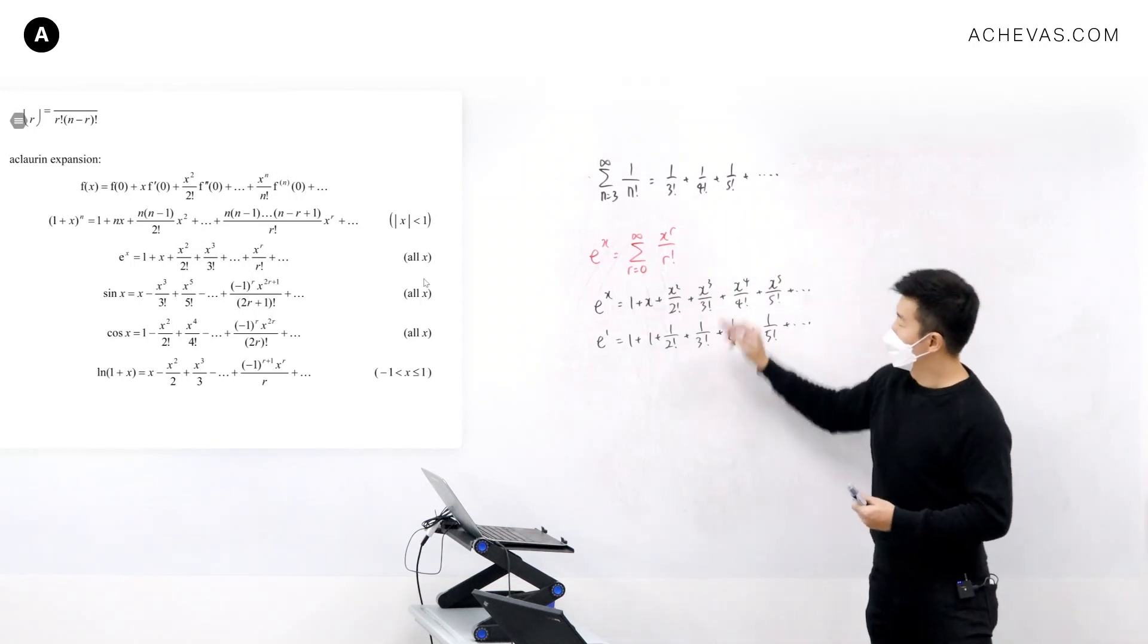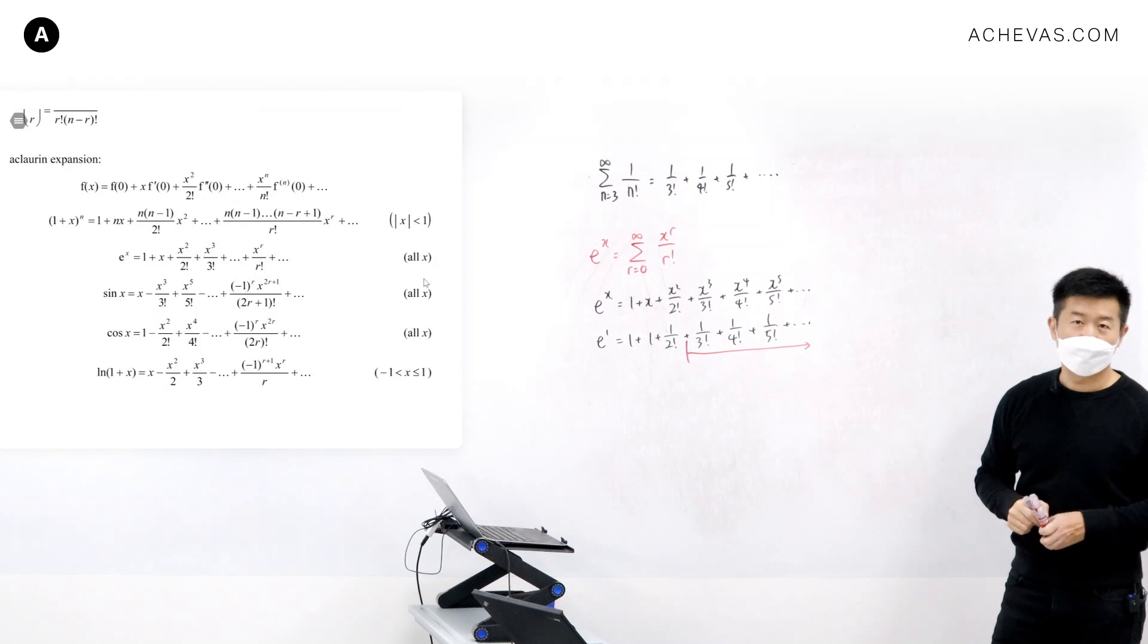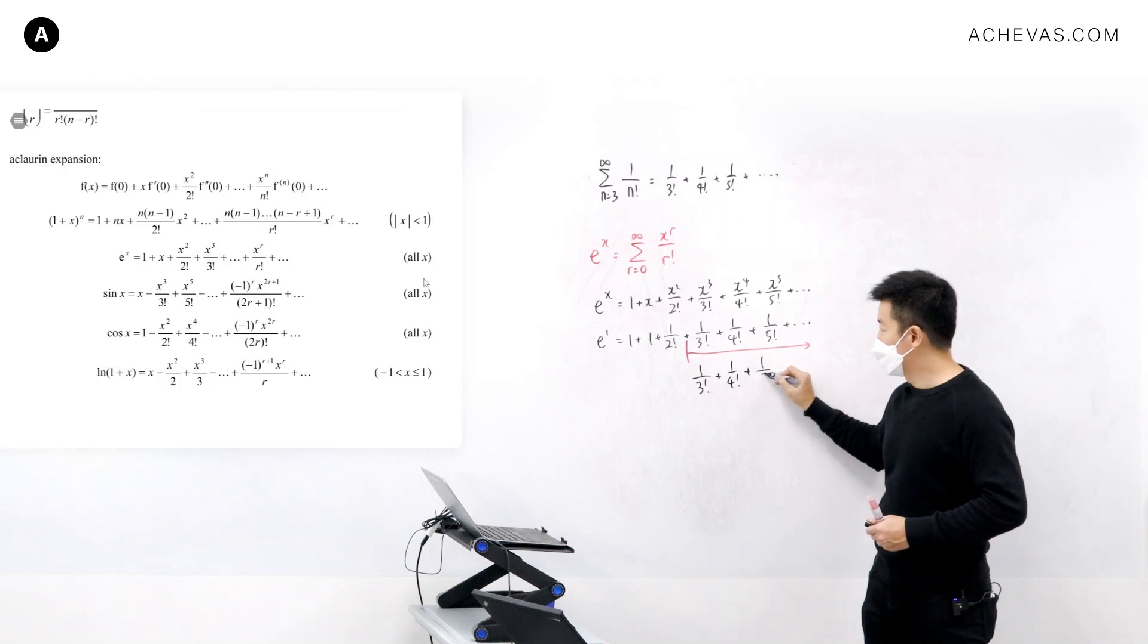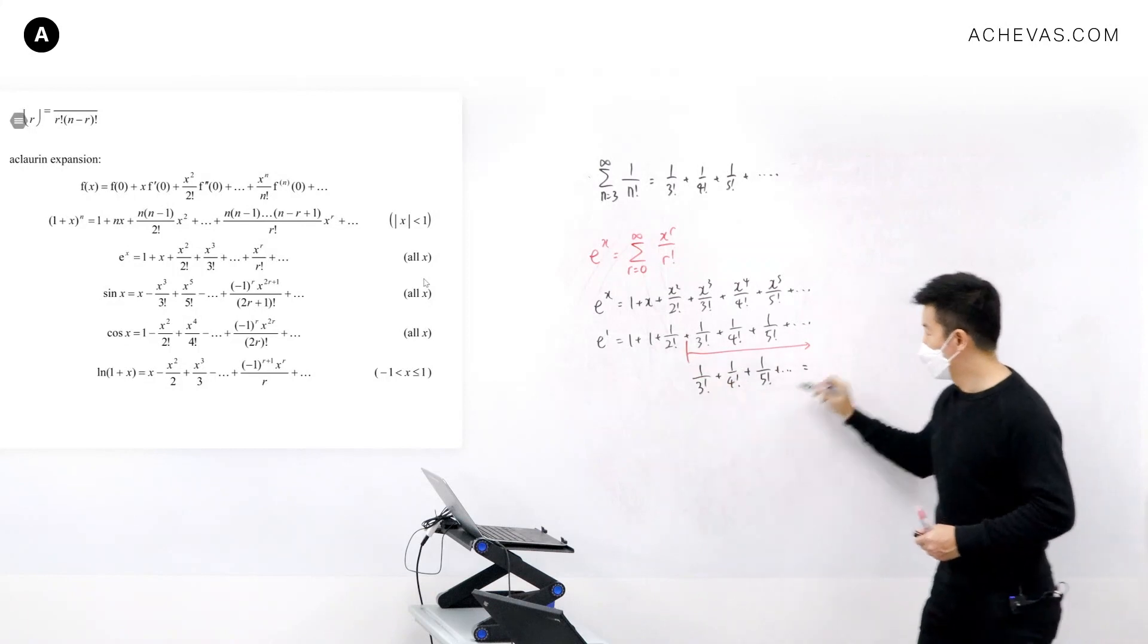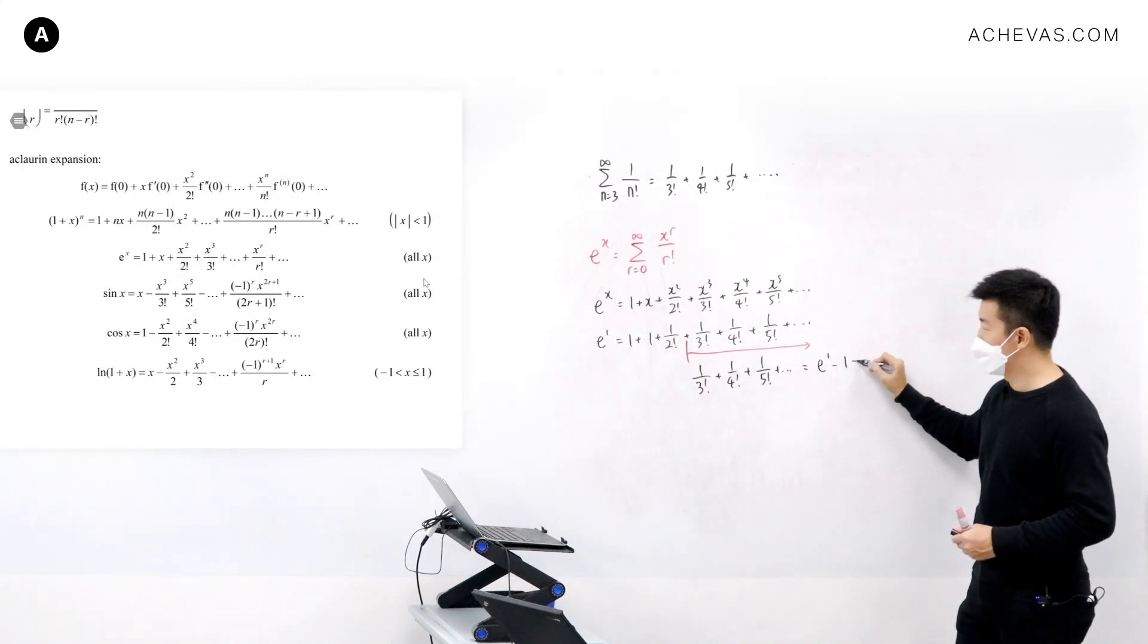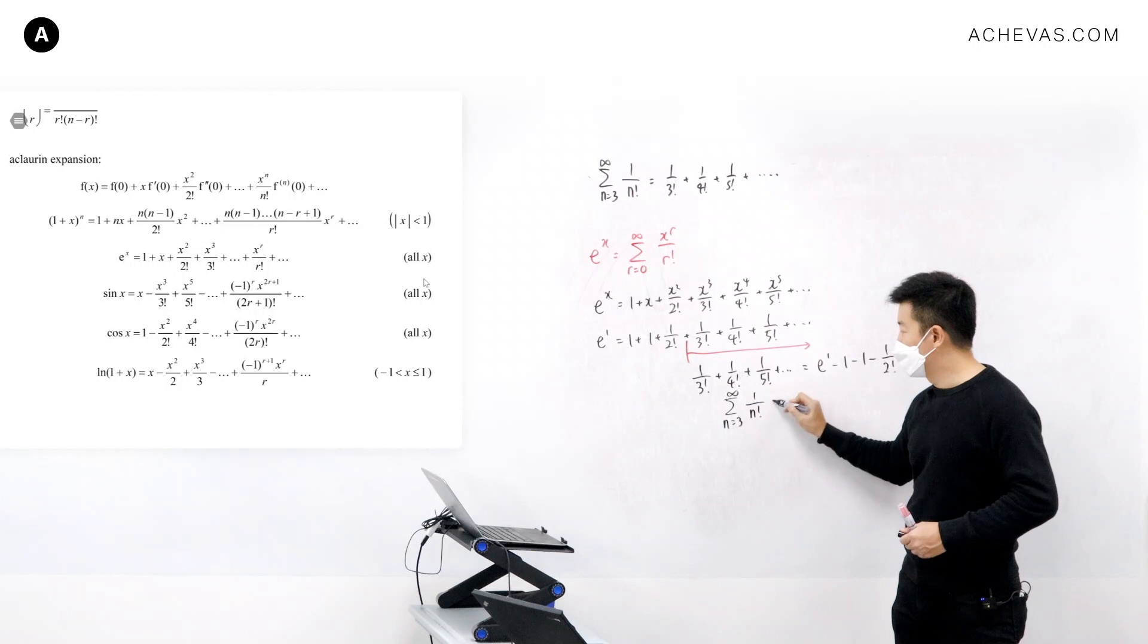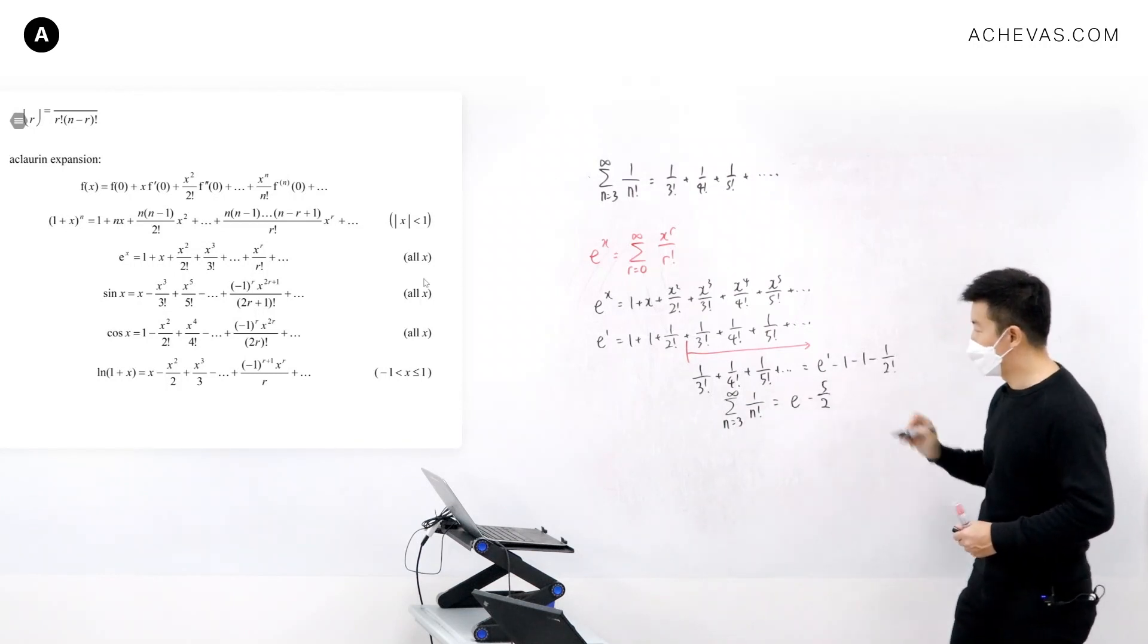And I'm supposed to evaluate this to infinity. So I know 1 over 3 factorial plus 1 over 4 factorial, 1 over 5 factorial all the way until infinity is e to the power of 1 minus 1 minus 1 minus 1 over 2 factorial. And this is sum from n is equal to 3 all the way until infinity of 1 over n factorial. It's going to be e to the power of 1 minus away 5 over 2.